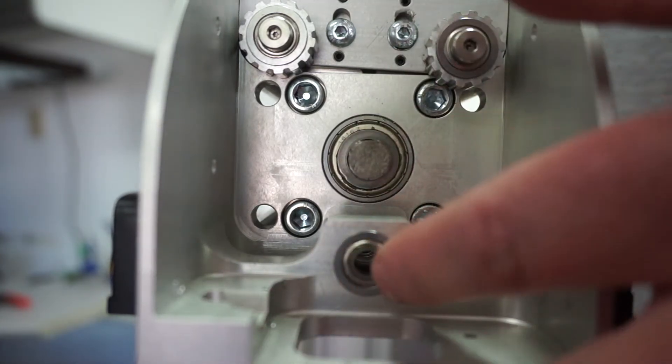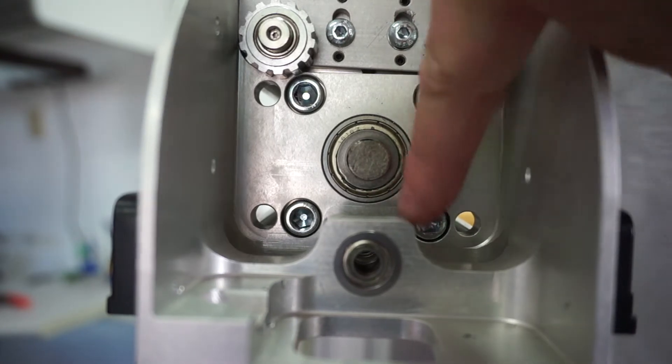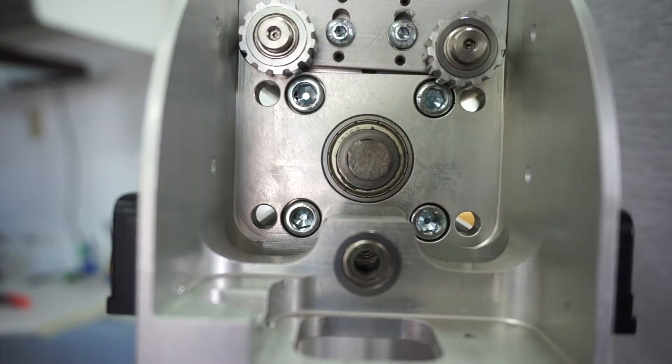Now there's a bearing in the front, a bearing in the back. These are pressed in. There's also another bearing right back here. If you're doing this and you've had a lot of hours on your machine, you might want to check your bearings and make sure they're okay.